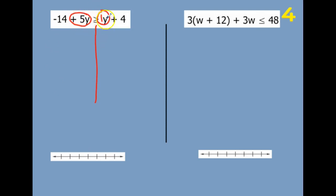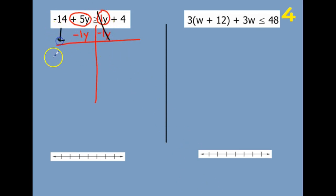You have to add or subtract it — you can't just combine it and make 6. So if I move this 1y, I'm going to subtract 1y from both sides. The 1 minus 1 goes away. We have down here a negative 14, and then 5y minus 1y is 4y. Write this symbol — then there's a 4.